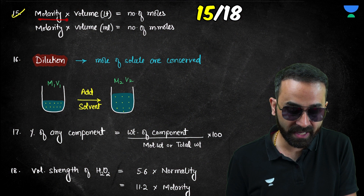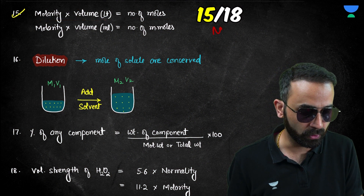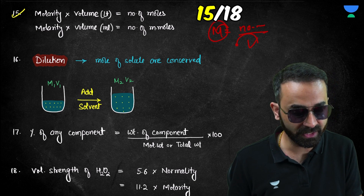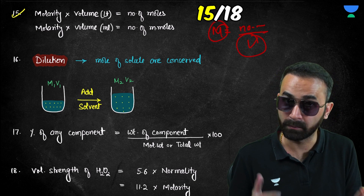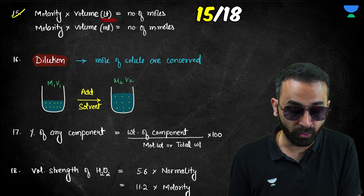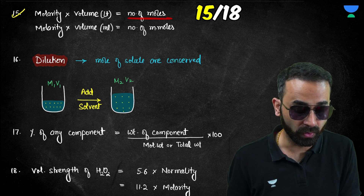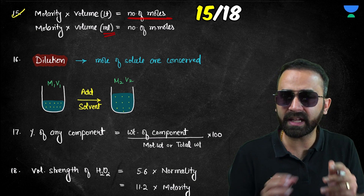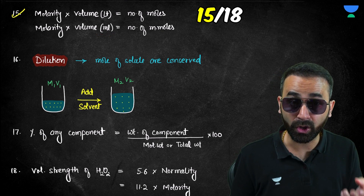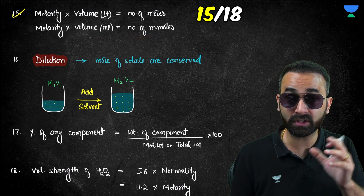Formula fifteen: molarity times volume equals number of moles — since molarity is moles of solute divided by volume. Be careful: this only gives moles when volume is in liters. In most questions, volume is given in milliliters, in which case molarity times volume in mL gives millimoles, not moles.